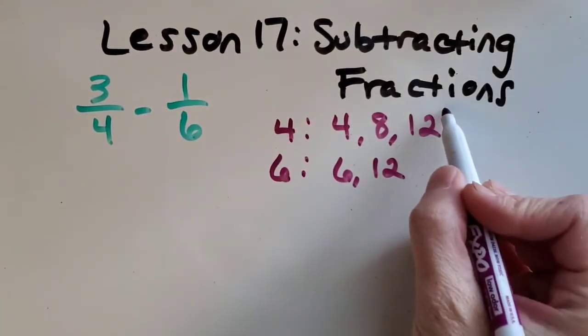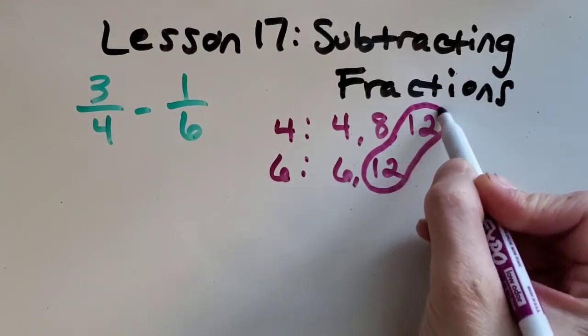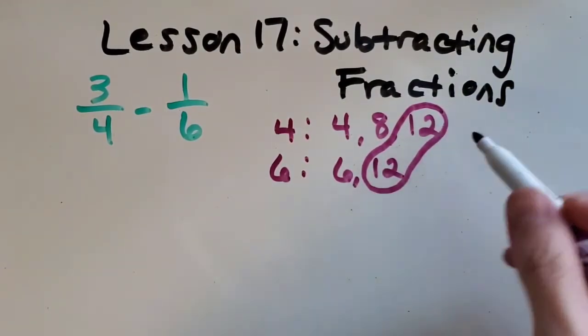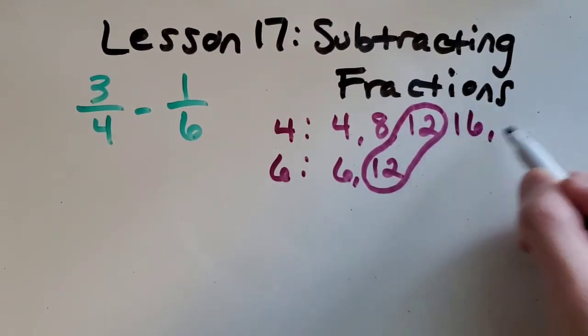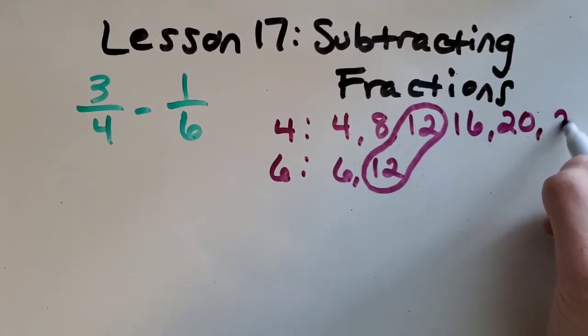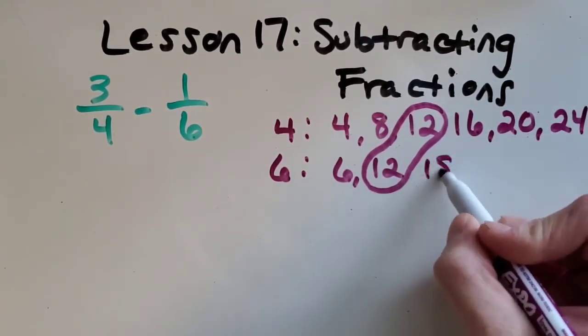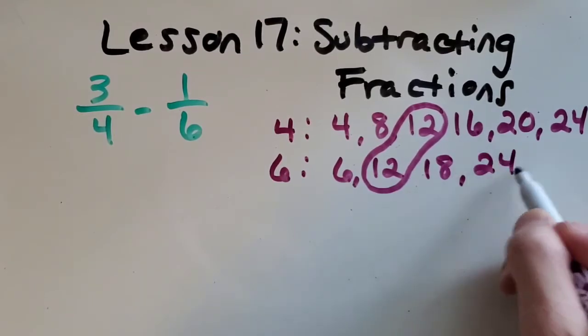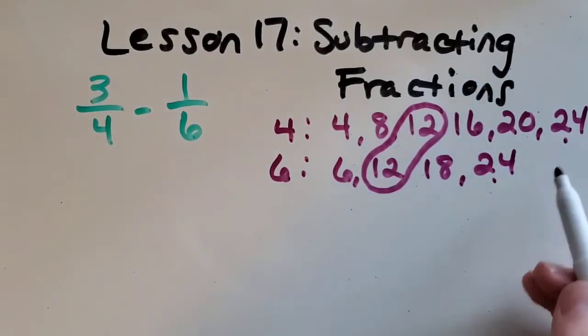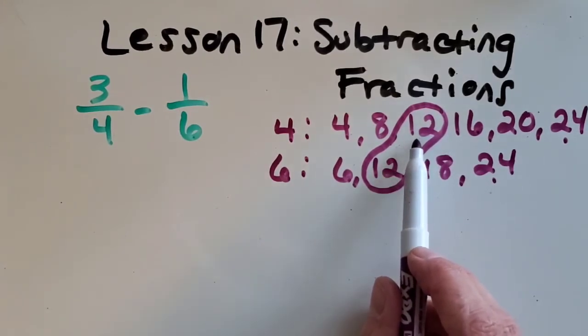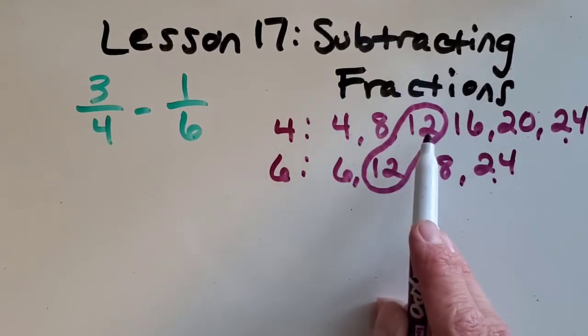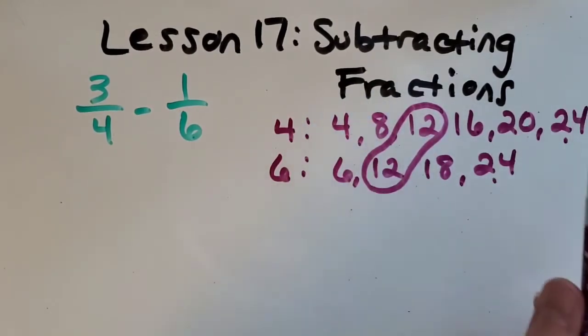Okay hopefully you found 12 as the least common denominator. You know one thing I haven't really talked about is you could keep this going and then you would end up with another number in common. Okay so watch this. There's also 24 but to me I like to pick the least common multiple because it's the easiest one to work with. So in this case I could do 4 times 3 instead of 4 times 6. So that's just a little tip there.